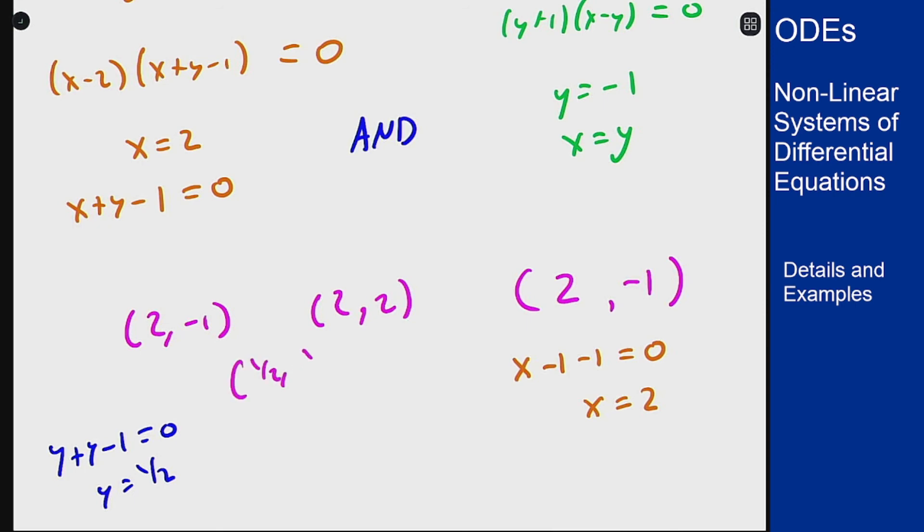So one half and one half and as we notice here we actually have a duplicate point. This point here was listed twice. It actually came out of two different equations that we had here which means that our actual list of equilibrium points does not include that point. It only includes it once. So our actual list of equilibrium solutions for this problem is that set of three right there.